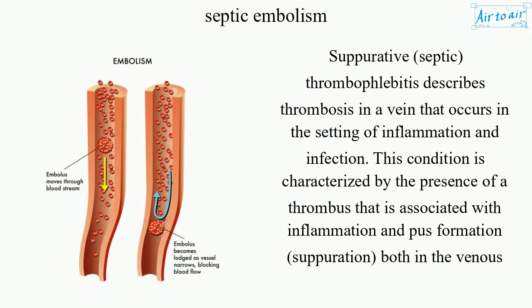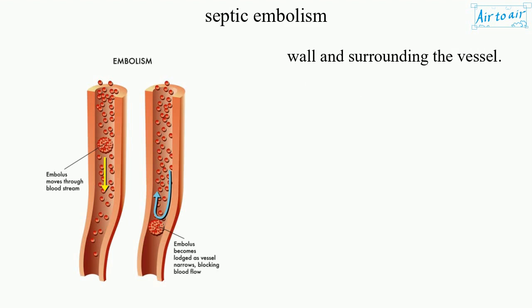Suppurative septic thrombophlebitis describes thrombosis in a vein that occurs in the setting of inflammation and infection. This condition is characterized by the presence of a thrombus that is associated with inflammation and pus formation — suppuration — both in the venous wall and surrounding the vessel.